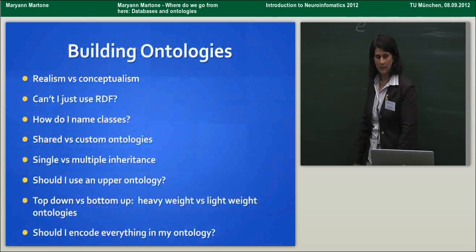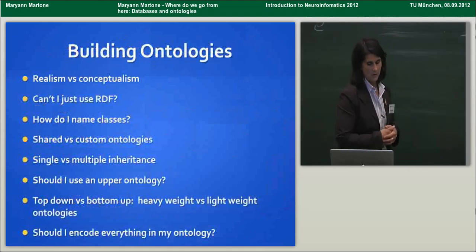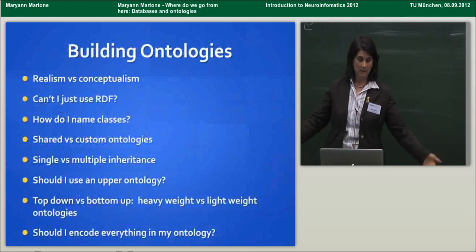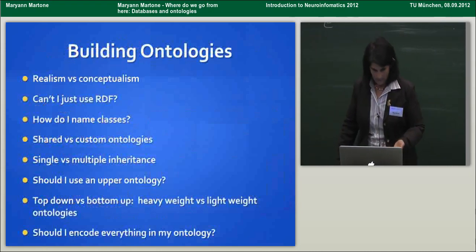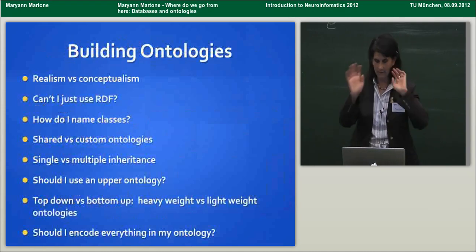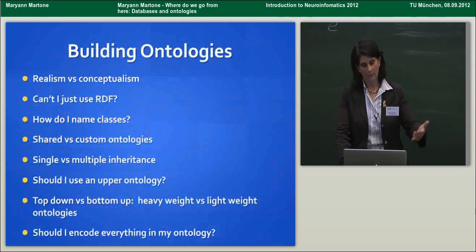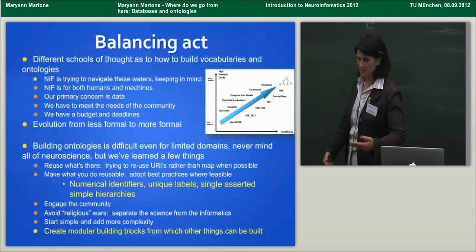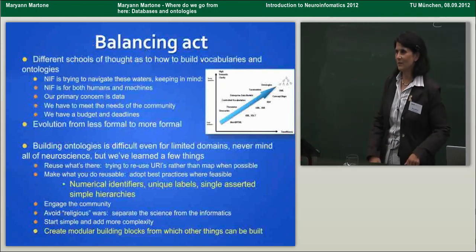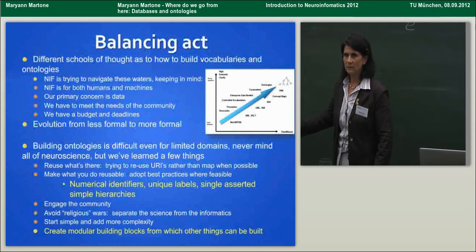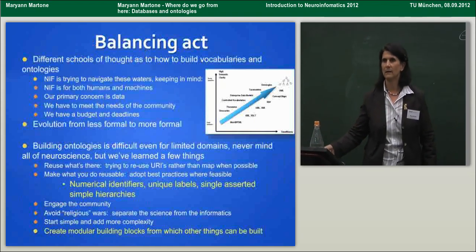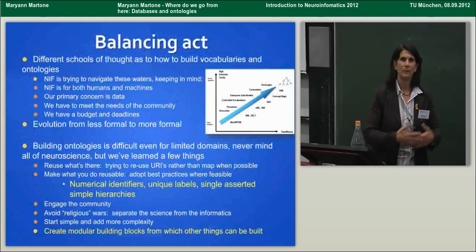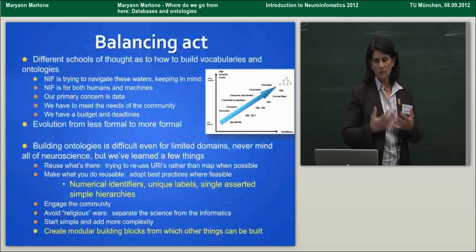How do we build ontologies? There are issues about realism versus conceptualism, whether to use RDF or OWL, how to name classes, shared versus custom ontology, single versus multiple inheritance. One thing NIF has found is that the extremes on either end are almost universally wrong — you can be too simple and have no semantics, or you can spend all your time appropriately placing a Purkinje neuron in its glorious hierarchy and after five years have classified one neuron. Generally with all of these things, there's a useful middle way that lets you move forward reasonably without getting bogged down.